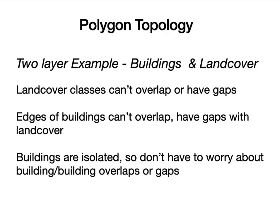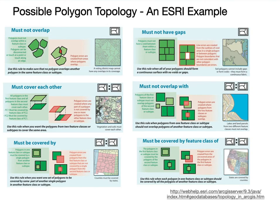Here's another example of building topology rules and applying them, from an Esri-based product. We have two layers — buildings and land cover — and the rules we want to apply are: land cover classes can't overlap or have gaps; edges of buildings can't overlap with land cover, so the two layers create a fabric that completely covers our area of interest; and buildings are isolated, so we don't worry about building-to-building overlaps or gaps. Esri has a whole series of rules you can apply — this is just a subset — and you pick the rules to enforce the topological constraints you want, both between and within layers.